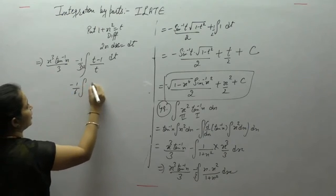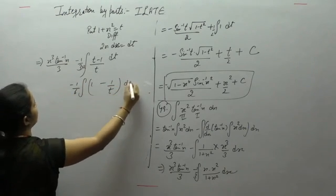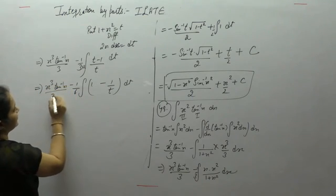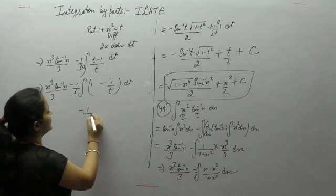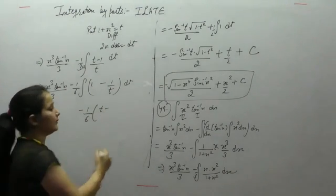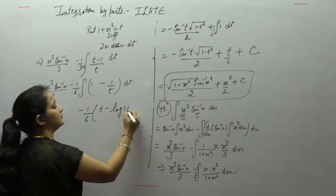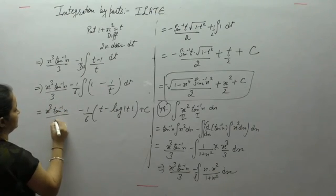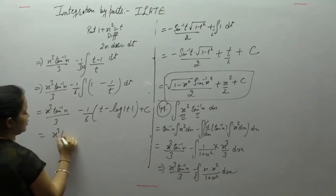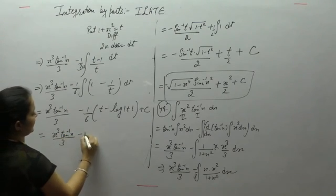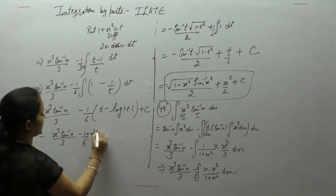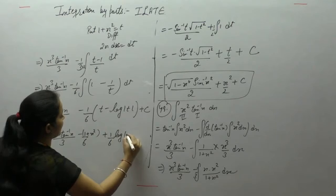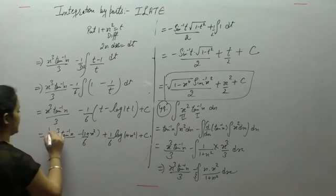Separate the terms: t upon t gives 1, minus 1 upon t. The result is x³ tan inverse x upon 3, first term as it is. The integral of 1 is t, and the integral of 1 upon t is log of t. Now put the value of t back: x³ tan inverse x upon 3 minus 1 by 6 into (1 plus x²), plus 1 by 6 log of (1 plus x²) plus c.